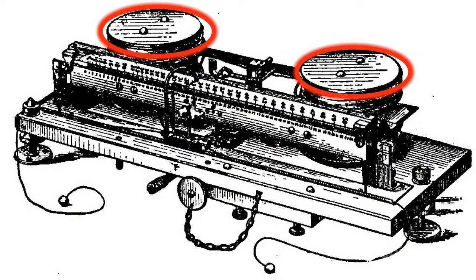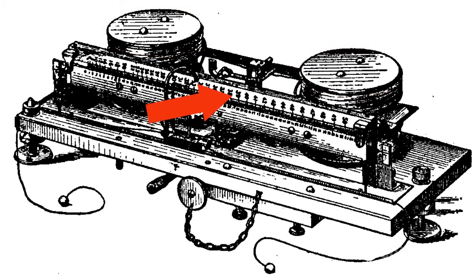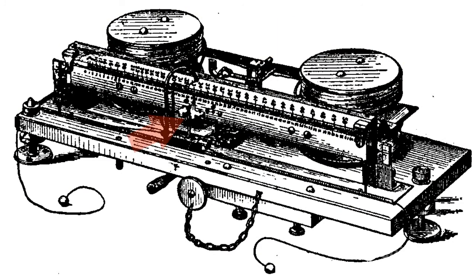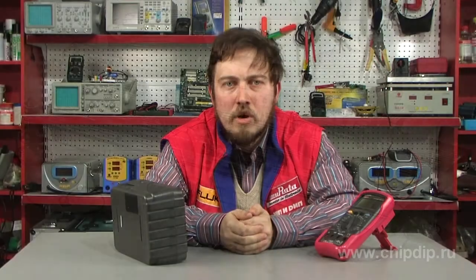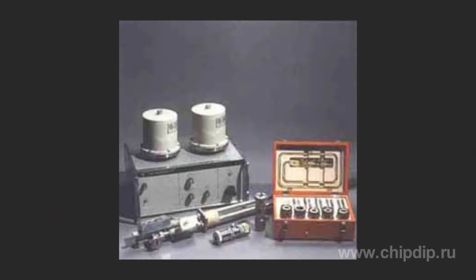Structurally, the Ampere balance consists of movable and immovable current-carrying coils and a high-precision equal-arm beam balance. A movable coil is connected to one arm, while the balance pan with counterweights is attached to the other. The balancer's left arm bends due to the interaction between the movable and immovable series-connected coils, to which a constant electric current is applied. This force is balanced by counterweights placed on the balancer's pan.